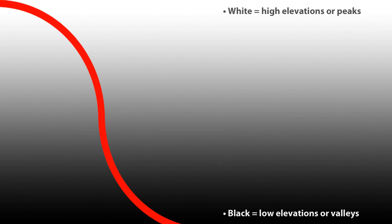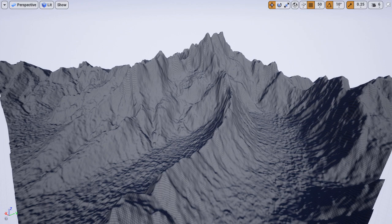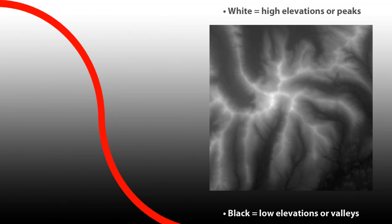All landscapes in UE4 rely on height map data to create the terrain. Here's what a height map texture looks like, and here's what it looks like after importing it into UE4. Remember: black are low elevations, or valleys, and white are high elevations, or peaks.